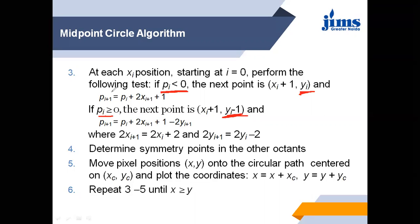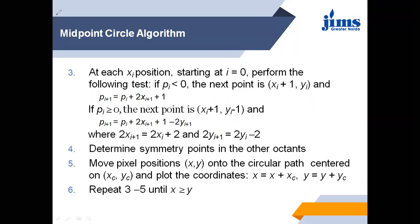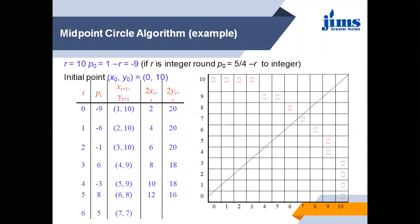Every time we have to find out the value of pi plus 1, and it depends on whether pi is less than 0 or greater than 0. When the value of pi is less than 0, we use one expression to find the next decision parameter. When the value of pi is greater than or equal to 0, we use a different equation. So here we have to use two different equations depending on whether pi is less than or greater than or equal to zero.